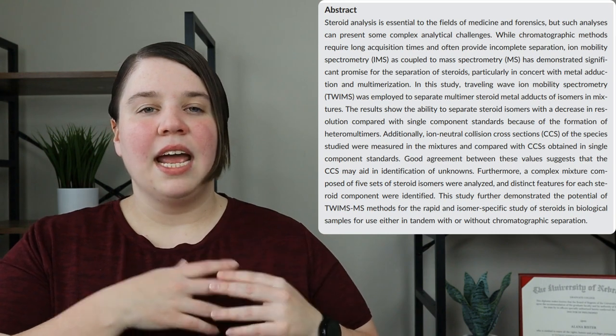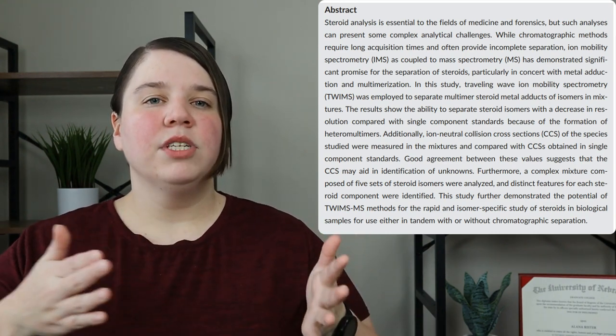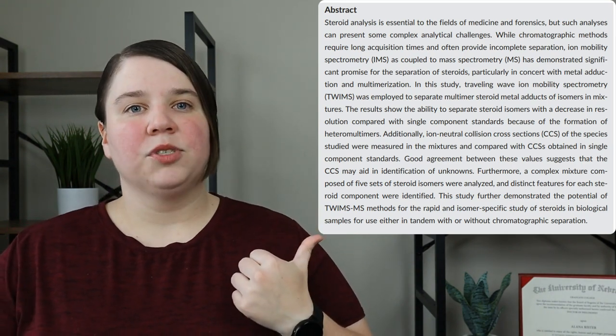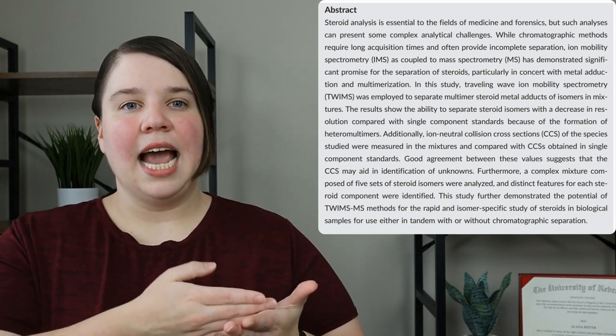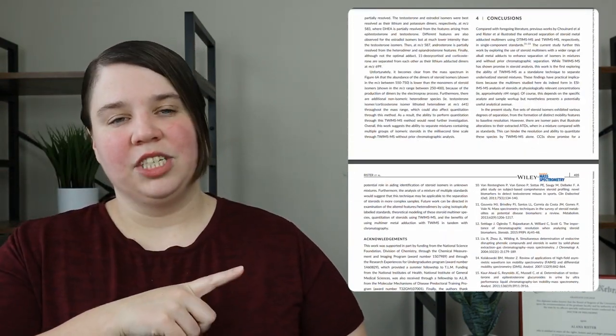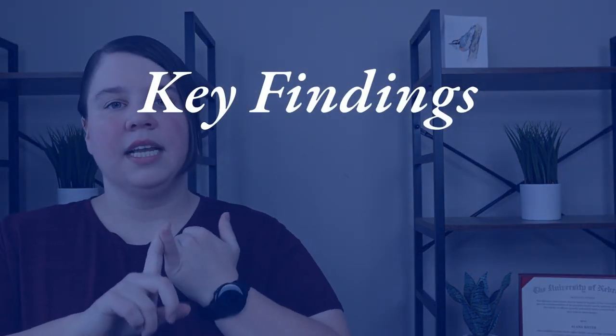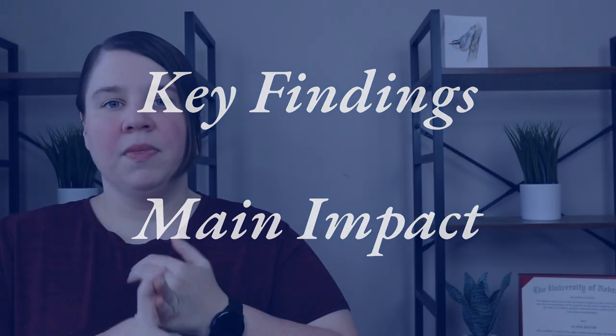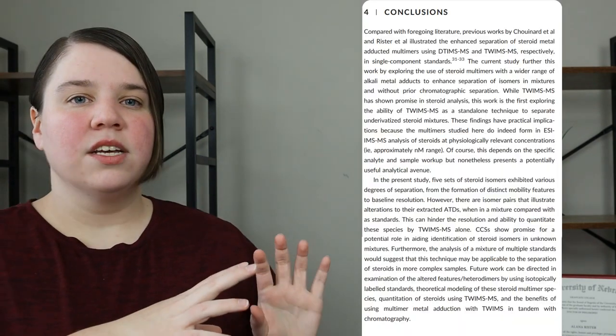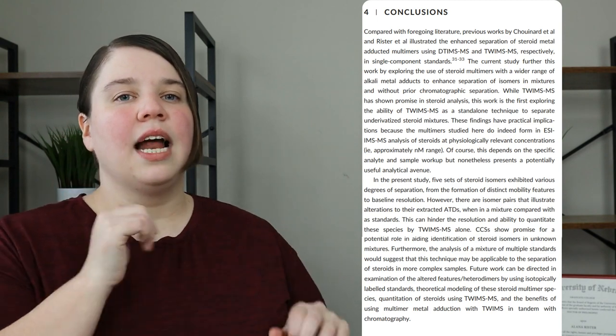For example, in this paper, if I'm actually interested in TWIMS and thinking about how it separates steroid isomers, looking at this abstract I can see it's relevant — they actually separated steroid isomers. I want to go all the way down to the conclusion section, which should tell me the key findings and main impact. I'm also thinking about what other research ideas I can develop from this. Looking at this conclusion, it's still talking about steroid separation, so I know I'm good to go.